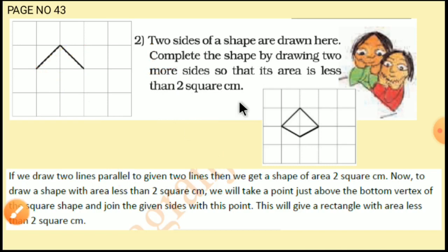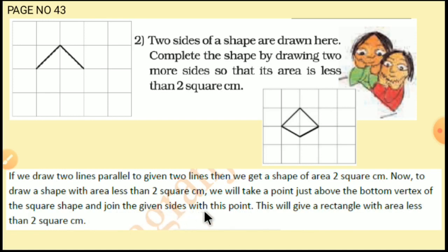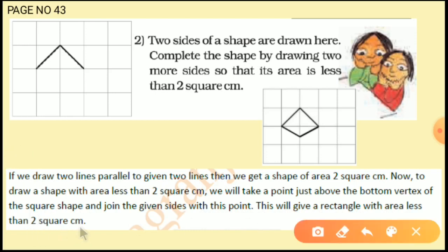To draw a shape with area less than 2 square centimeter, we will take a point just above the bottom vertex of the square shape and join the given sides with this point. Instead of taking the original vertex, we will take a vertex somewhere above it.